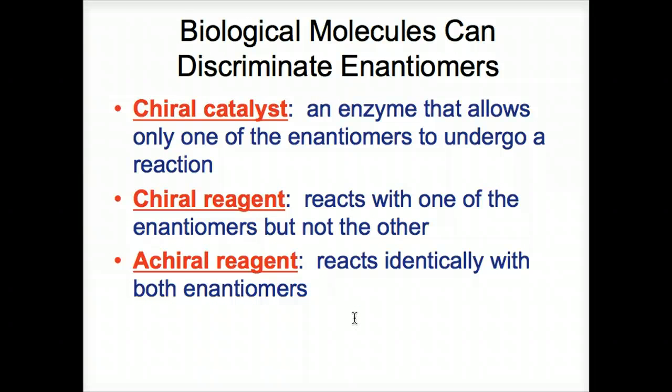Biological molecules can discriminate enantiomers. We have three definitions here. One is chiral catalyst, an enzyme that allows only one of the enantiomers to undergo a reaction. What is an enzyme? It's a protein that catalyzes a chemical reaction. D-amino acid oxidase catalyzes only the reaction of the R enantiomer and leaves the S enantiomer unchanged. The reactant enantiomer can be easily separated from the unreacted enantiomer. That's a chiral catalyst.